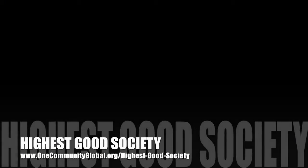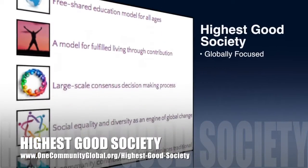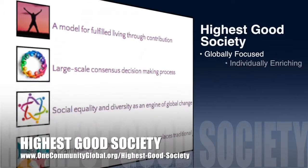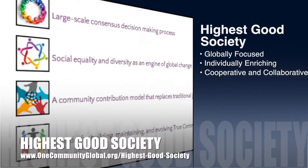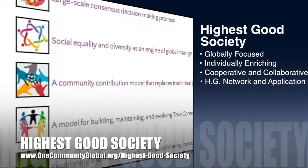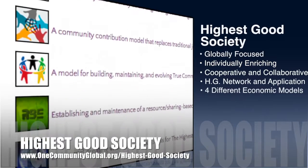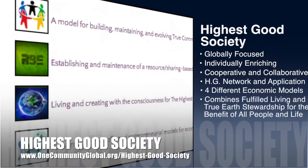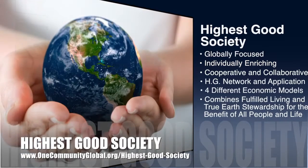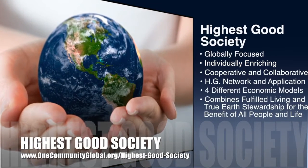The One Community approach to highest good society is globally focused, individually enriching, cooperative and collaborative. It includes a highest good network and application, four different economic models, and combines fulfilled living and true earth stewardship for the benefit of all people and all life on this planet.